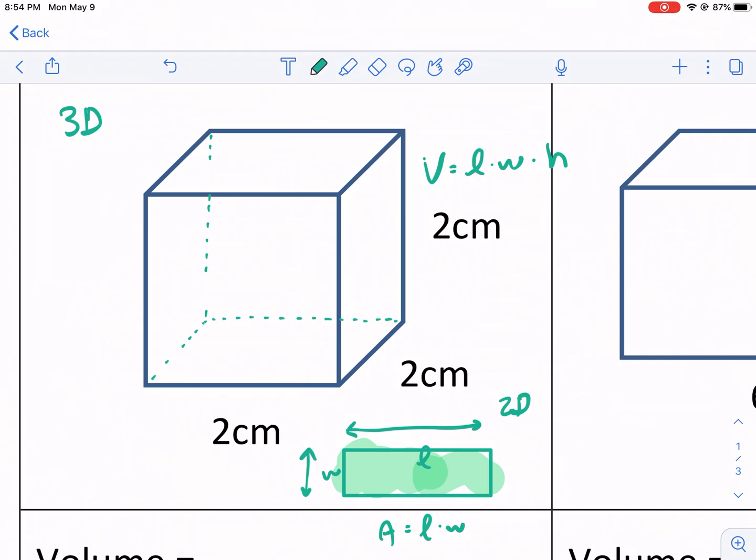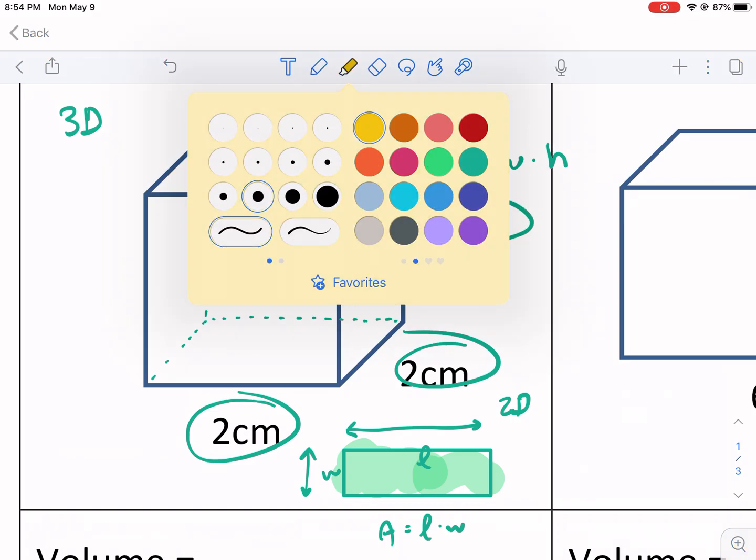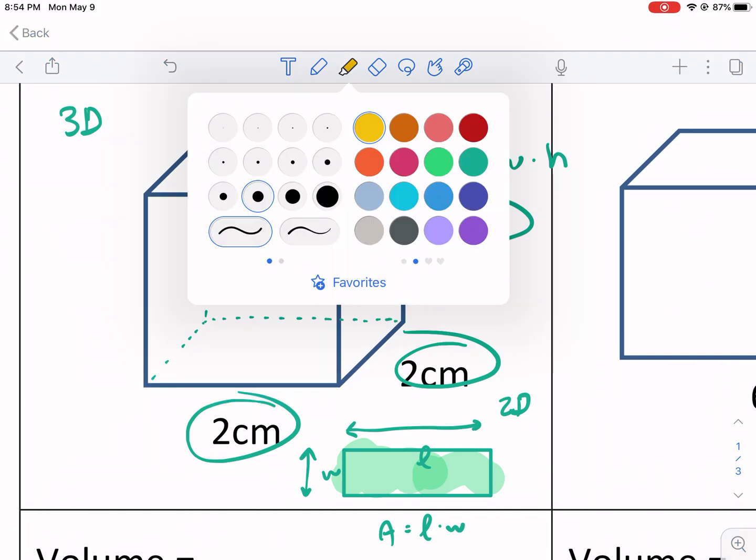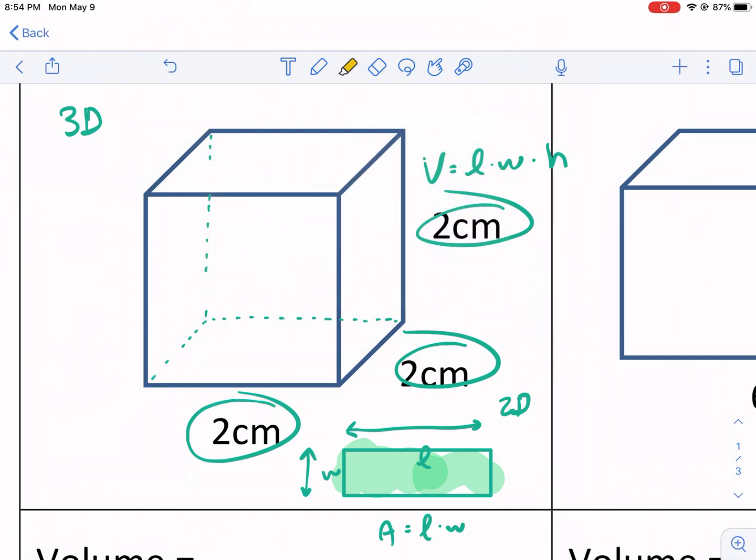What are those dimensions? Well, it's just 2, 2, and 2 for this one. That makes this one a cube. It's a special rectangular prism where all the dimensions are the same and all the sides are the same length. Here's our 2, here's our 2, and there's our other 2.